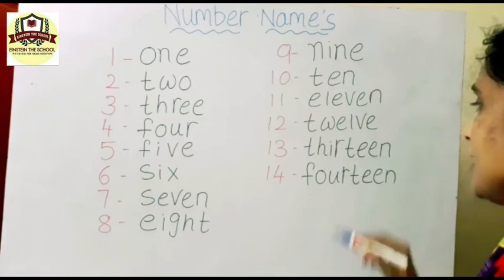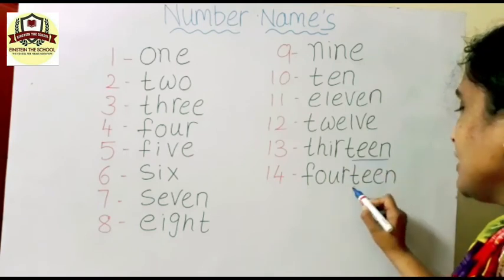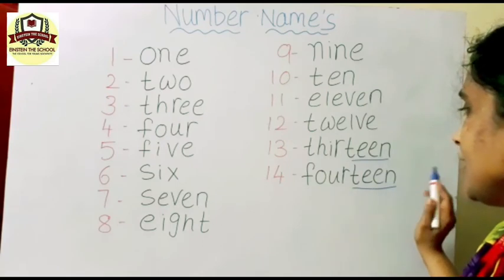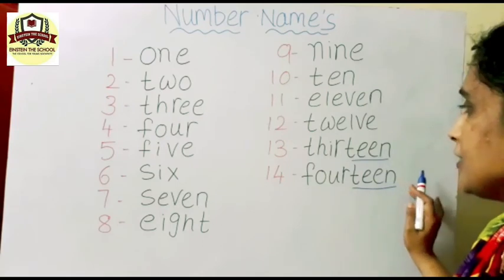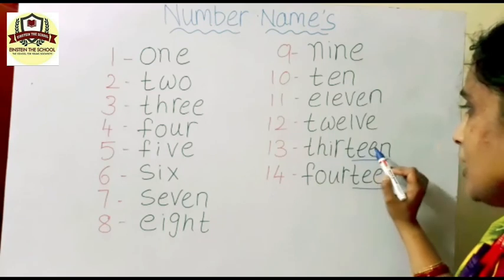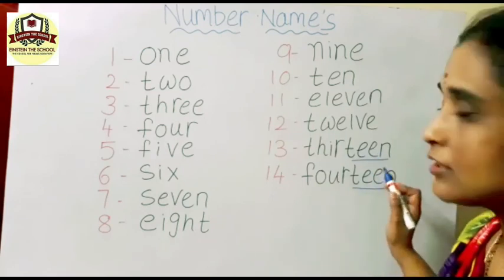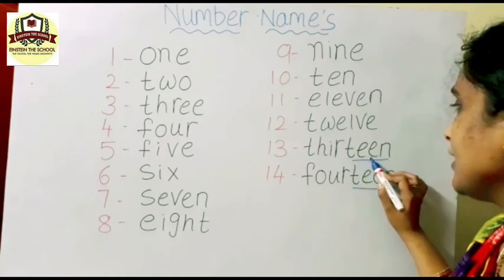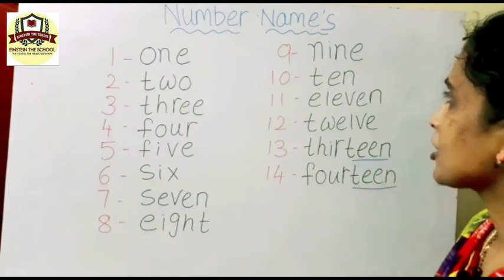In 13 and 14, at the end you will get teen, I told you, no? T-E-E-N, T-E-E-N will get here from 13 to 19. At the end you will get all these numbers teen, T-E-E-N. Understood children?